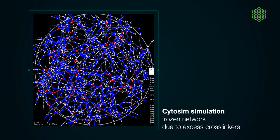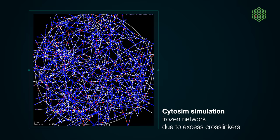But this dependence of the actin contraction with the number of crosslinkers and motors is not linear. If you keep increasing the number of crosslinkers, you do not necessarily get more contraction. You can eventually freeze the network because you have too many crosslinkers and now none of the fibers can move anymore.